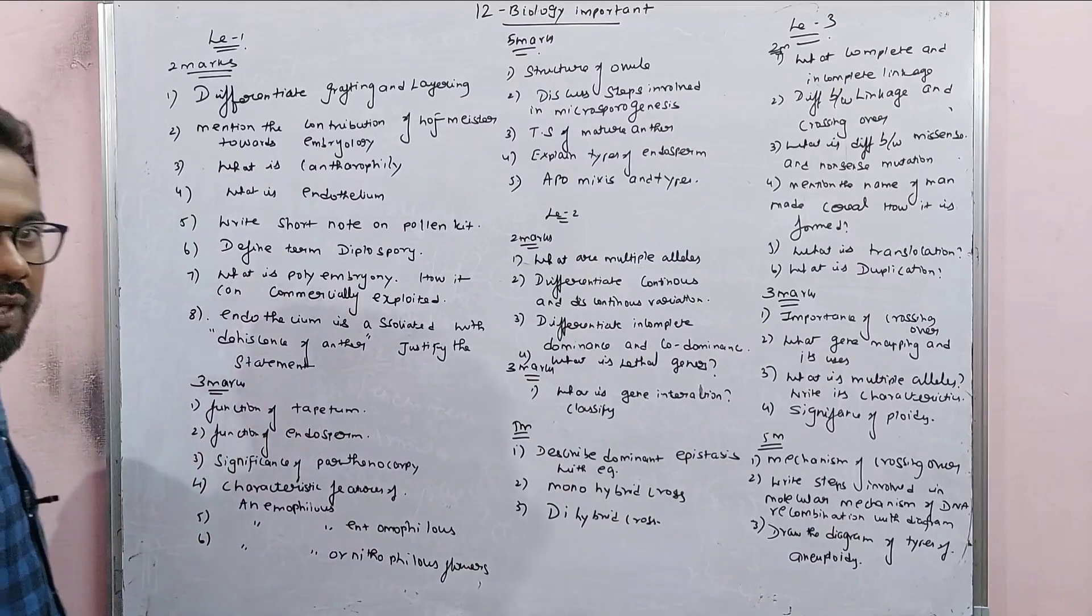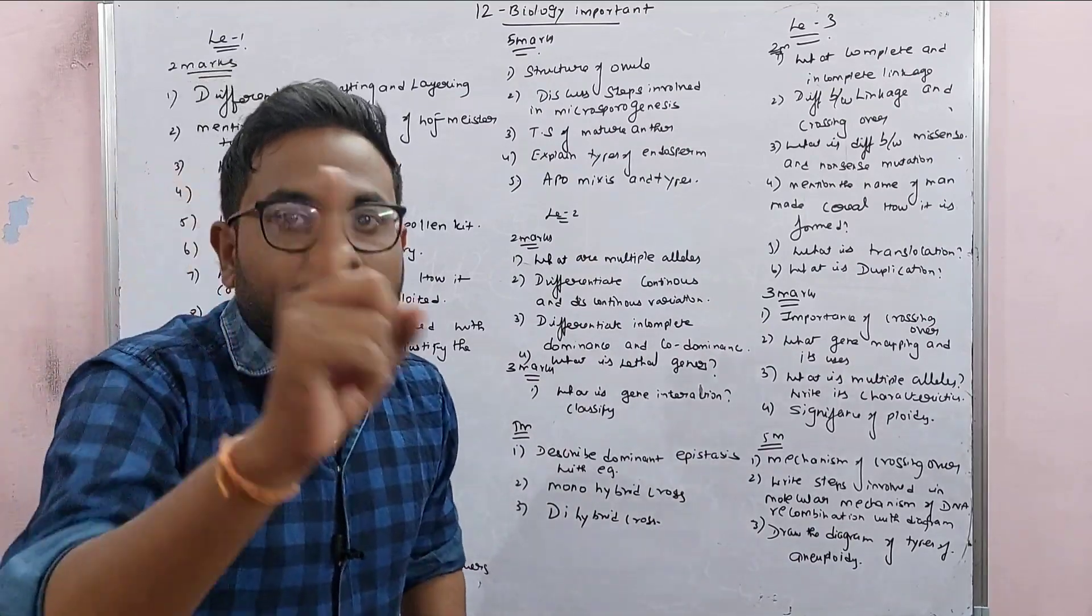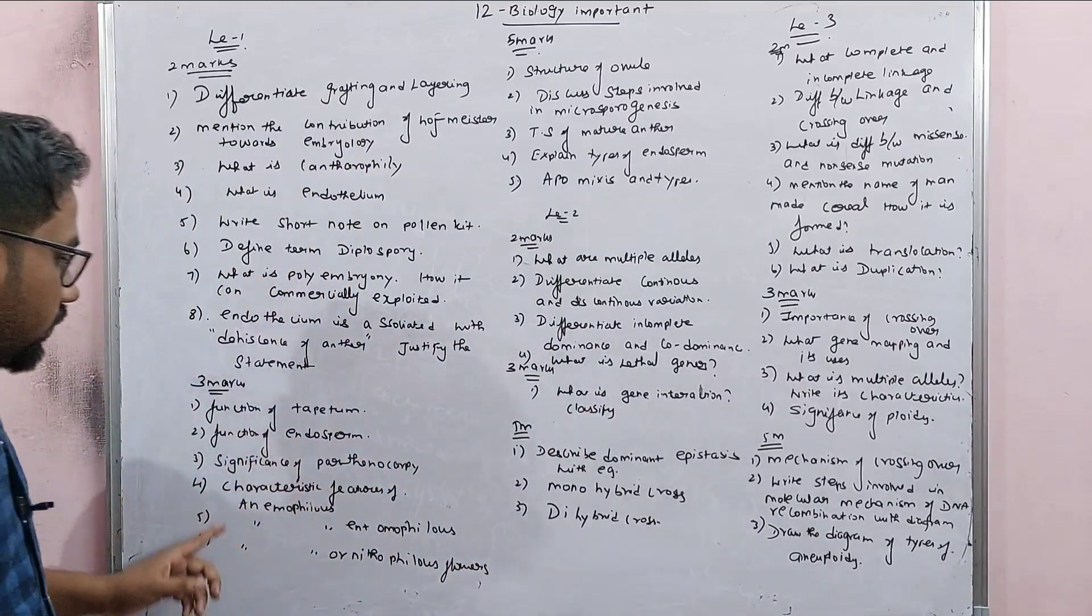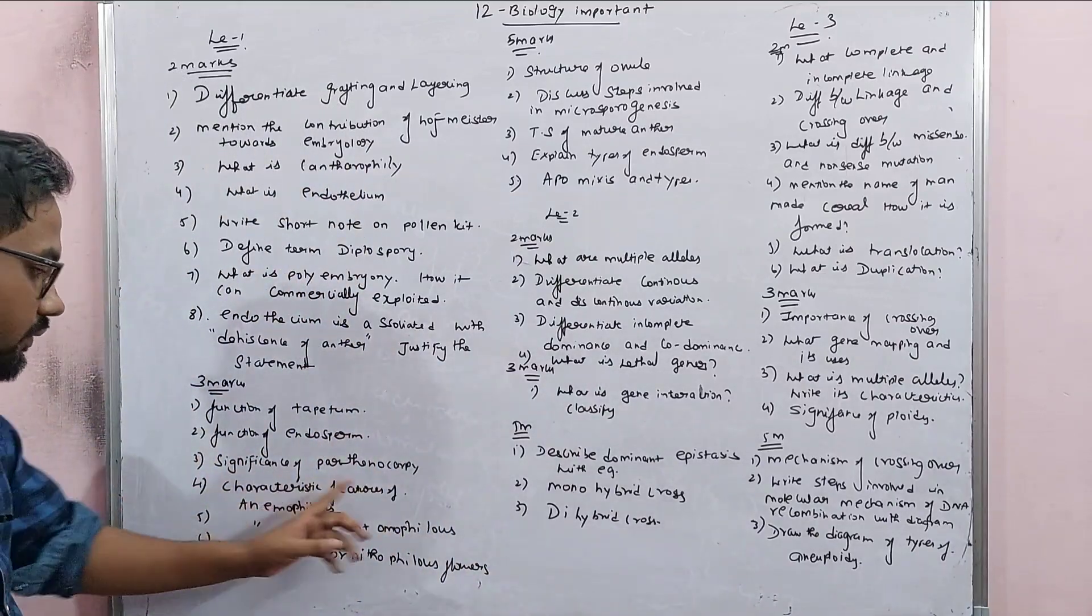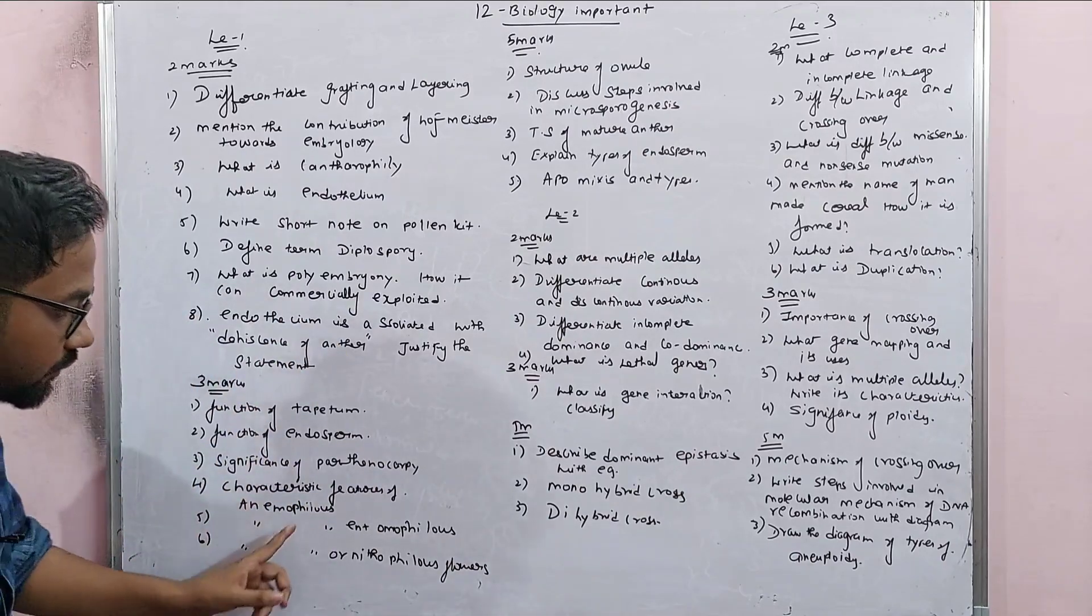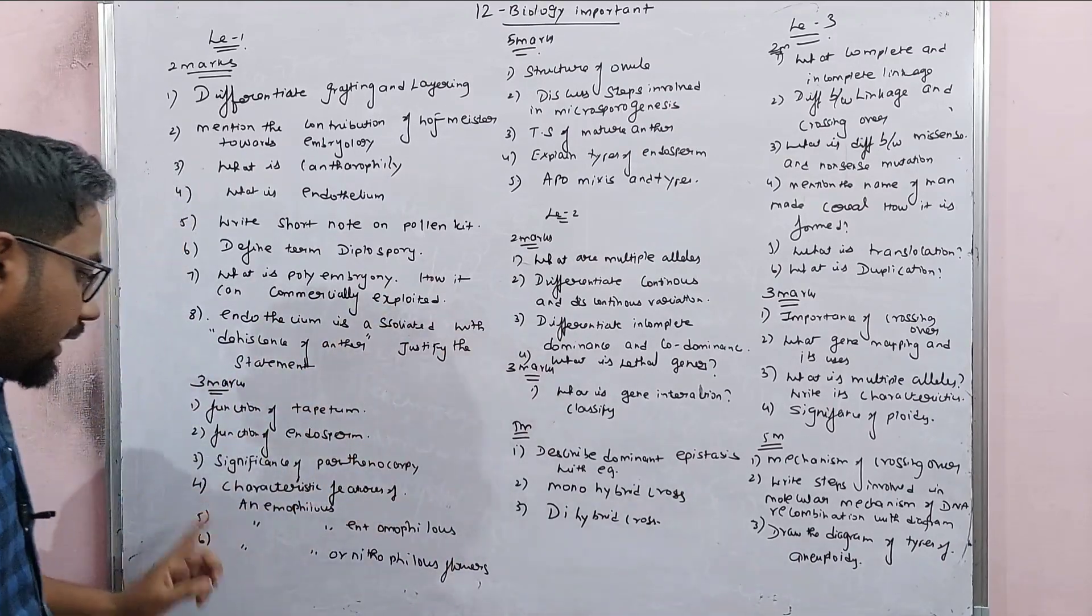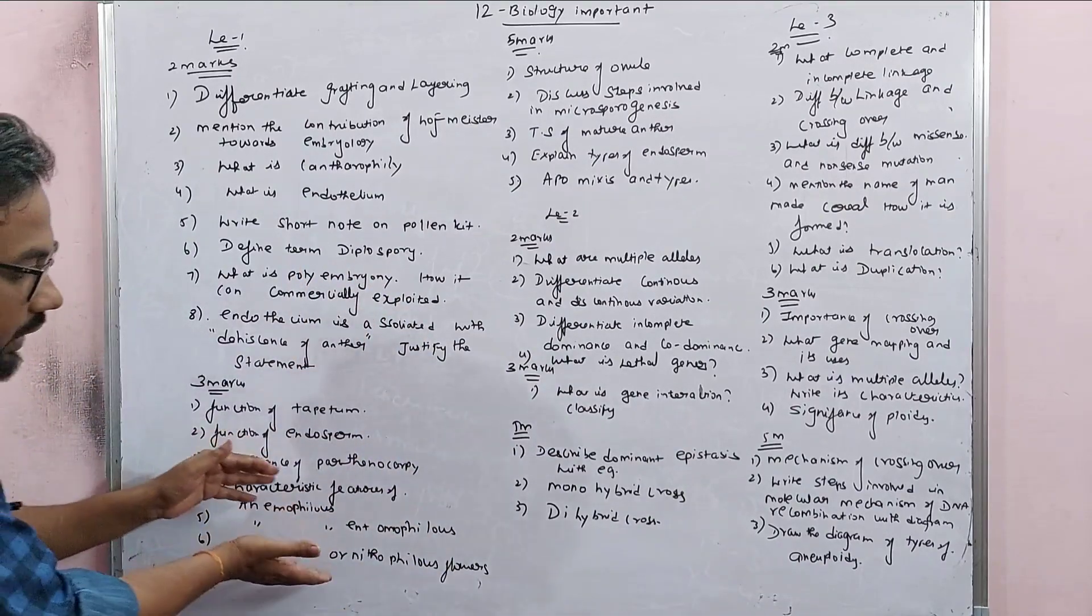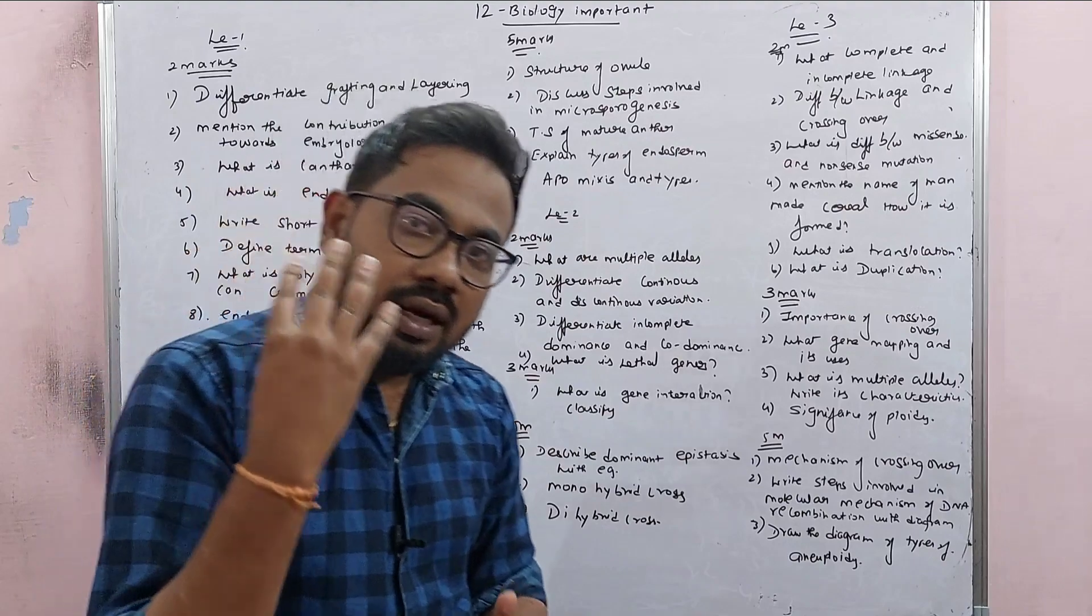3 Mark: Function of Tapetum. Confirm I am going to get the function of Tapetum. Failures are different from Tapetum. Function of Endothelium, Significance of Parthenogenesis. Characteristics of Entomophilous plants, Characteristics of Ornithophilous flowers. So in the 3 Characteristics, you can learn at least 4 points.